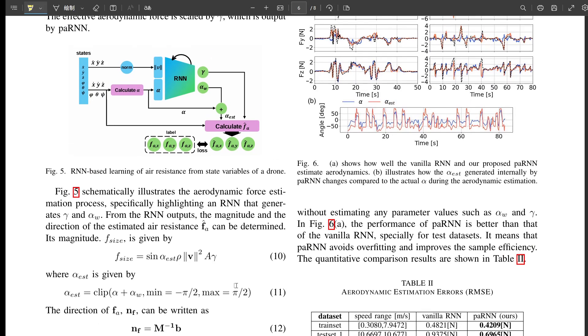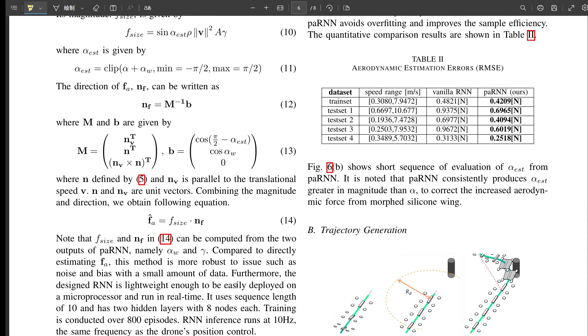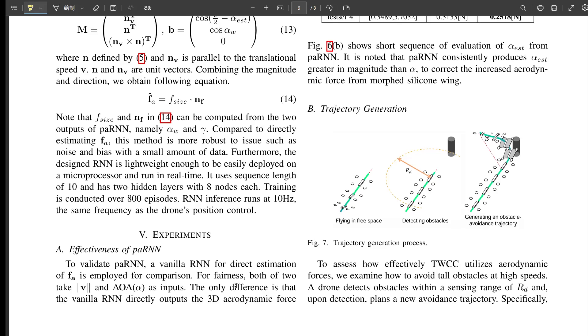Overfitting, where it learns the training data perfectly but can't handle new situations. Precisely. The physics provides guardrails, helping it generalize better to conditions it hasn't seen before. The researchers actually quantified this. They showed the peron-N significantly reduced the RMSE in predicting the aerodynamic forces. We're talking improvements of at least 24%, up to over 70% compared to a standard RNN. That's a huge jump in accuracy. Wow, 70%. That's massive.